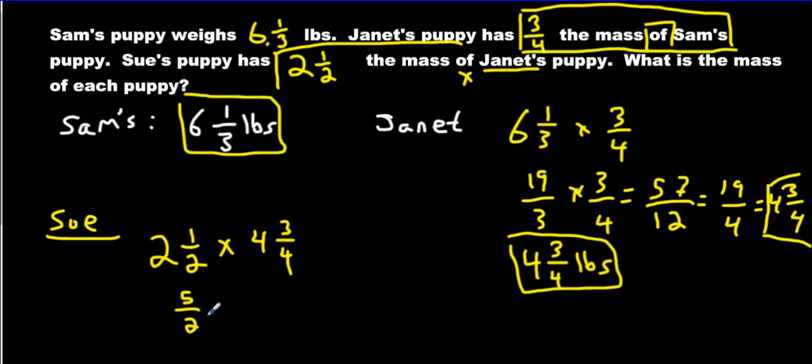Multiply these. You're going to get 5 over 2 multiply by 19 over 4. Let's multiply these numbers. We're going to get 5 times 9, it's 45, carry the 4. We're going to get 95. And the denominator will be 8.